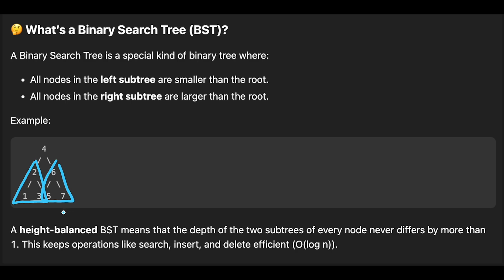A height-balanced binary search tree means that the depth of two subtrees of every node never differs by more than one. This keeps operations like search, insert, and delete efficient at O(log n). For example, a tree with nodes 3, 1, 4, 2 is also a height-balanced binary search tree because the height difference is just one.